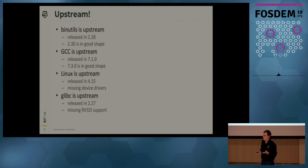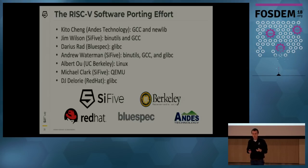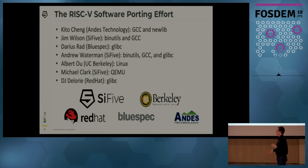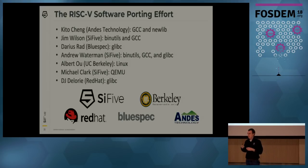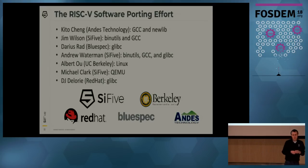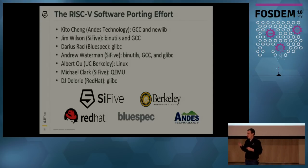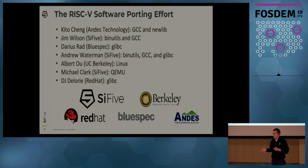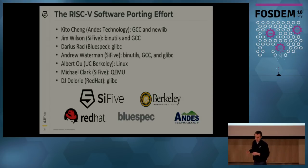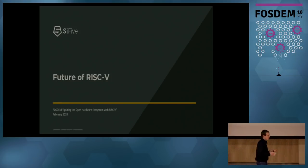I am a maintainer of all of those, but I couldn't do this by myself — porting software is a massive effort. I'd like to thank the various companies that have allowed their engineers to help: Berkeley, who still pays a couple of grad students to maintain RISC-V software; Red Hat, who's helping maintain GLibC; BlueSpec, helping maintain both GLibC and GDB; and Andes, who has done a lot of work on GCC and also LLVM. That's the current state of RISC-V — we've come a long way in the last four years.